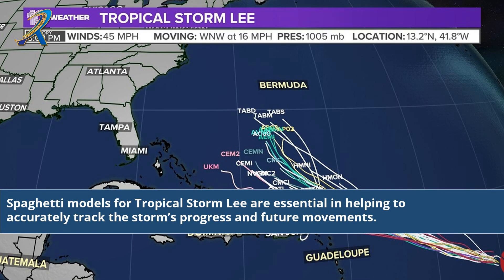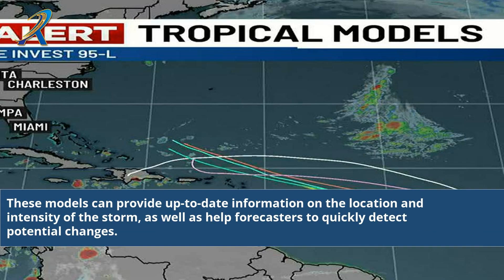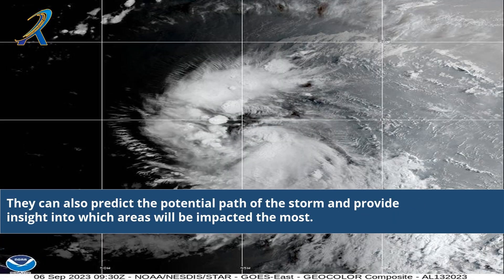Spaghetti models for Tropical Storm Lee are essential in helping to accurately track the storm's progress and future movements. These models can provide up-to-date information on the location and intensity of the storm, as well as help forecasters to quickly detect potential changes. They can also predict the potential path of the storm and provide insight into which areas will be impacted the most.